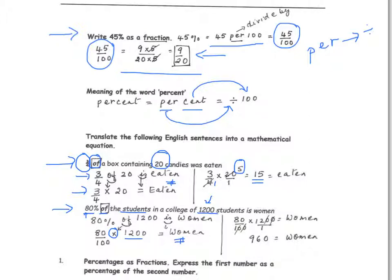So 80 over 100 times 1,200 — writing 1,200 as a fraction over 1 makes it clear what sits in the numerator and denominator. 100 goes 12 times into 1,200, so simplifying gives us 12 times 80, which is 960. The total number of women in this college is 960.